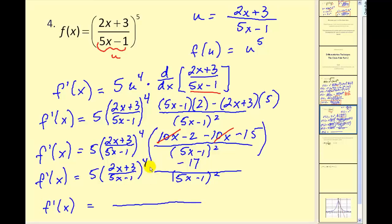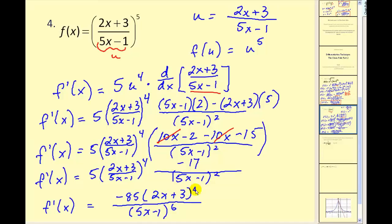Let's multiply these factors together. Here we have four factors of 5x minus 1, and over here we have 2, so our denominator would be 5x minus 1 to the sixth power. Our numerator is going to be 5 times negative 17, giving us negative 85, and then we have four factors of 2x plus 3. That sure was fun — let's do one more.